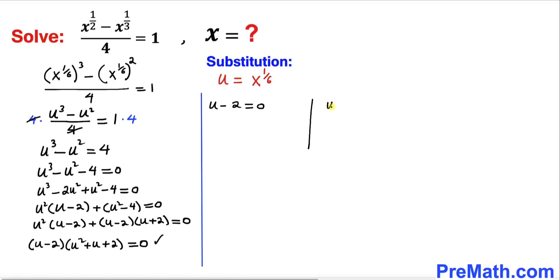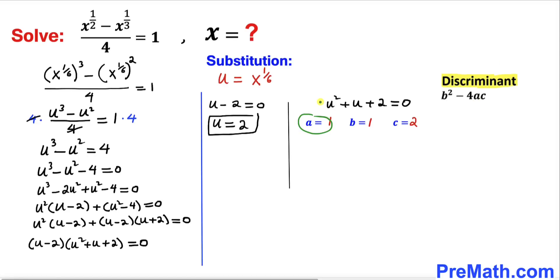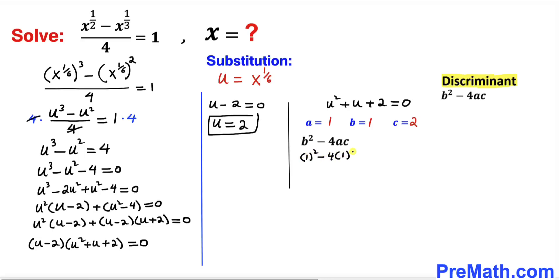Separating the factors: u minus 2 equals 0 gives u equals 2. For the quadratic u^2 plus u plus 2 equals 0, we use the discriminant: discriminant equals b^2 minus 4ac, where a equals 1, b equals 1, and c equals 2. Calculating: 1^2 minus 4 times 1 times 2 equals 1 minus 8, which equals negative 7.